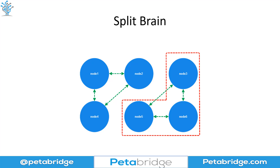This is what a split brain looks like, and what makes them so insidious is that from the point of view of your monitoring system, it actually looks like everything's healthy. You look and you see that you've got six servers — all six servers appear to be doing their job, none of them are necessarily reporting errors, and it all looks hunky-dory at the surface. But if you go a layer or two deeper, what you'll notice is that instead of one unified network, you actually have several networks — in this case two — that are effectively competing for traffic and trying to basically have different versions of the truth occurring inside this system.